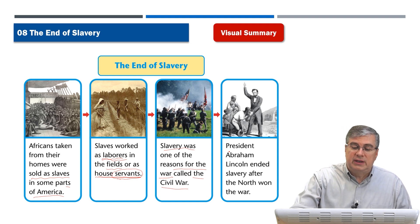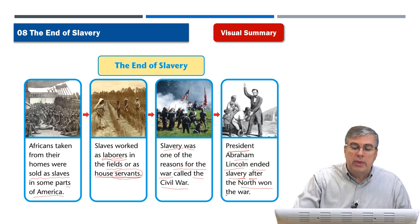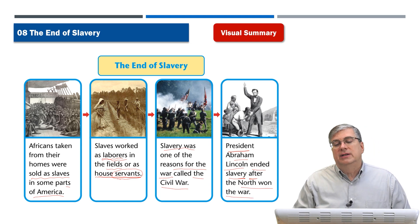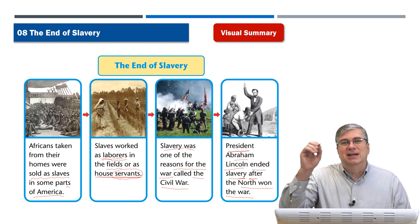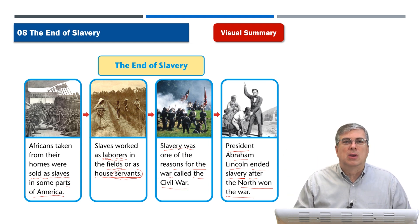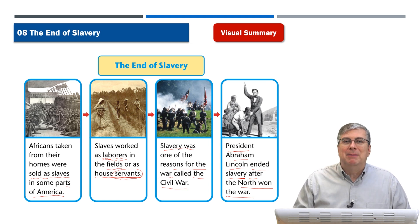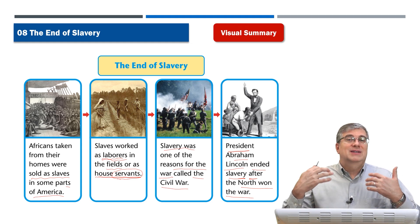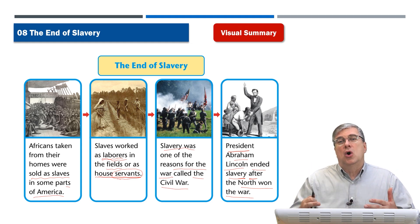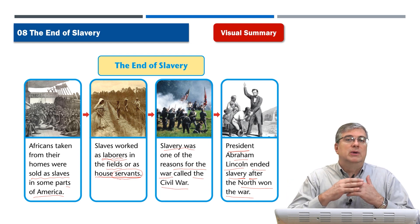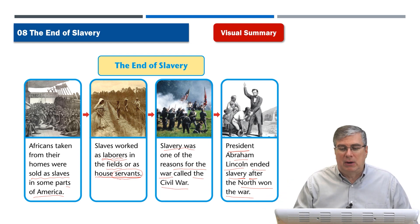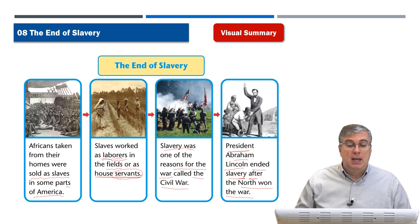After the war, President Abraham Lincoln ended slavery after the north won. President Abraham Lincoln signed a bill called the Emancipation Proclamation — basically a decree or statement that nobody can own another person. Slavery was outlawed throughout America.